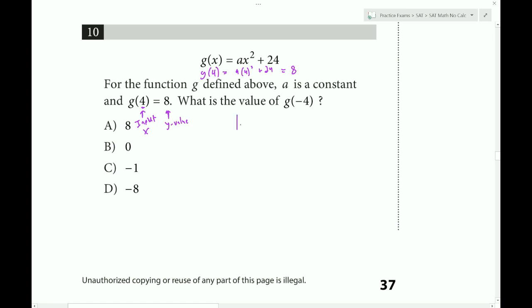So 4 squared is 16, so we get 16A plus 24 equals 8. And we're going to solve for A. So we subtract 24 both sides. We get 16A is equal to negative 16, divide, and we'll find that A is equal to negative 1. Answer choice C.